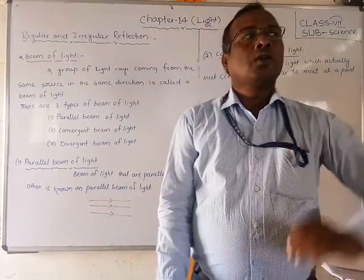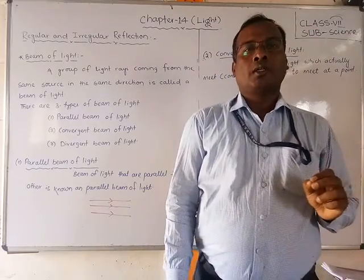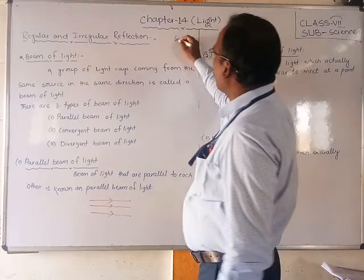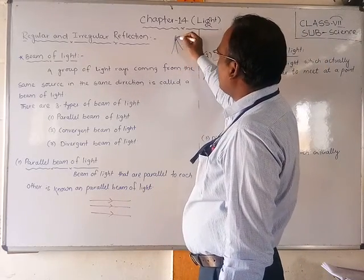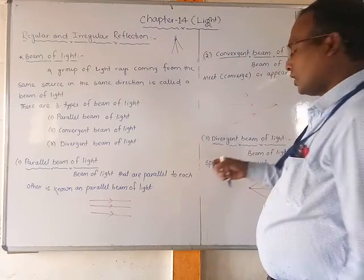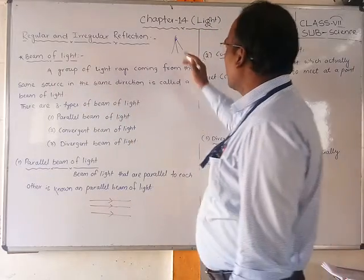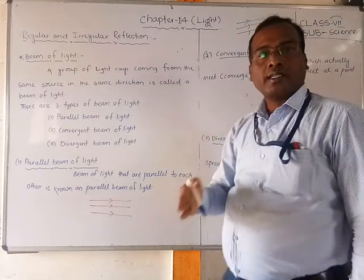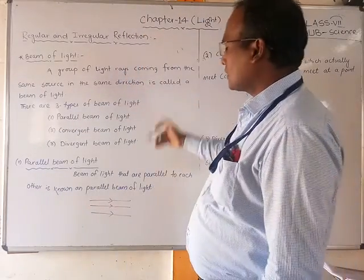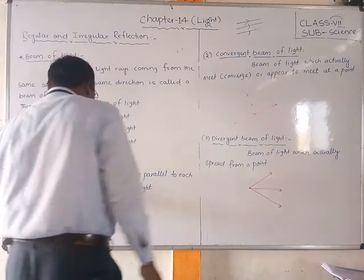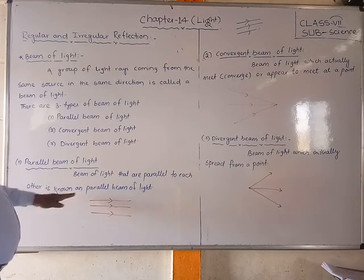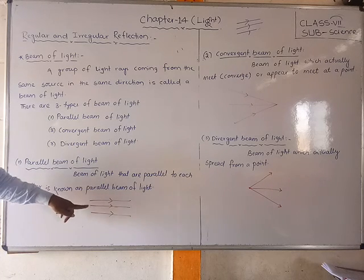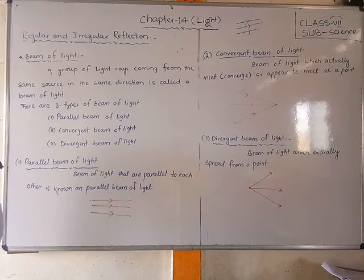What is a parallel beam of light? When rays are coming from a source and all those rays are parallel to each other — they do not spread out or converge, they travel parallel — that is called a parallel beam of light. All rays are parallel to each other; that is what makes it a parallel beam of light.